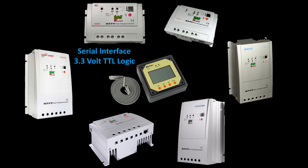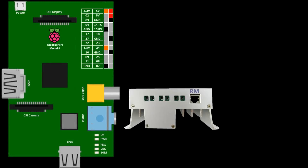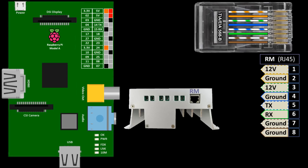A GitHub user named Steve created an excellent Python library and documented the serial pinout. The charge controller's remote meter, or RM port, uses an RJ45 jack which takes a common computer network cable. The pins are 12 volts on pins 1 and 3, ground on pins 2, 4, 7 and 8, serial transmit TX is pin 5, and serial receive RX is pin 6.